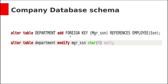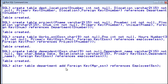While creating the department table, we did not add the manager SSN foreign key constraint because at that time the employee table was not yet created. So let us add this now using the ALTER TABLE command. Alter table department add foreign key (MgrSSN) references employee(SSN). We already created the employee table, so we can now add this foreign key constraint. Table altered.